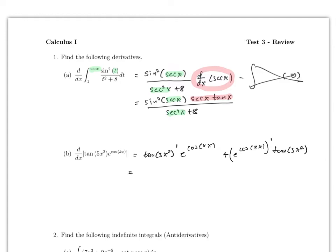The derivative of tangent — what are we going with? Should be secant squared, right? Times the derivative of the inside, which is 10x. And all of this is divided by e to the cosine kx. Now what is the derivative of the second one? It's e to the cosine kx, times negative sine kx times k. And then times tangent of φx squared.